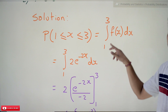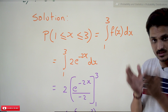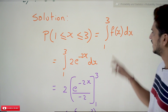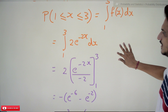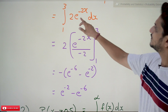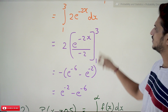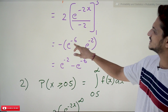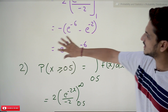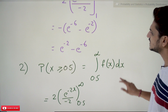For the probability that 1 ≤ x ≤ 3, we need to find the area under the curve between 1 and 3. That is the integral from 1 to 3 of f(x) dx, which is the integral of 2e^(-2x) dx. Taking the 2 outside, integrating e^(-2x) gives e^(-2x) / (−2), evaluated from 1 to 3. Substituting gives −e^(−6) − (−e^(−2)), which simplifies to e^(−2) − e^(−6). This is the probability value.